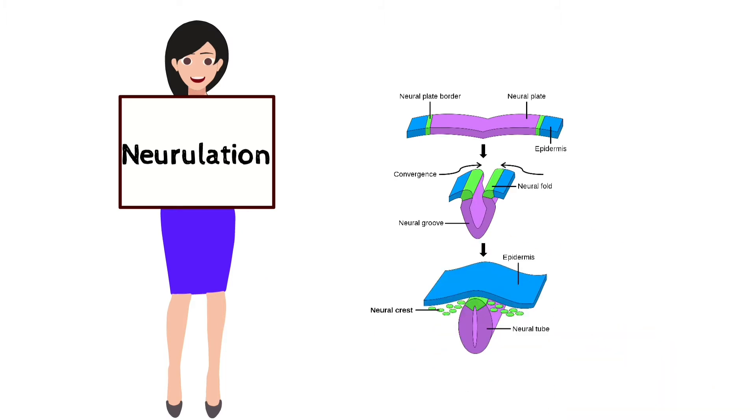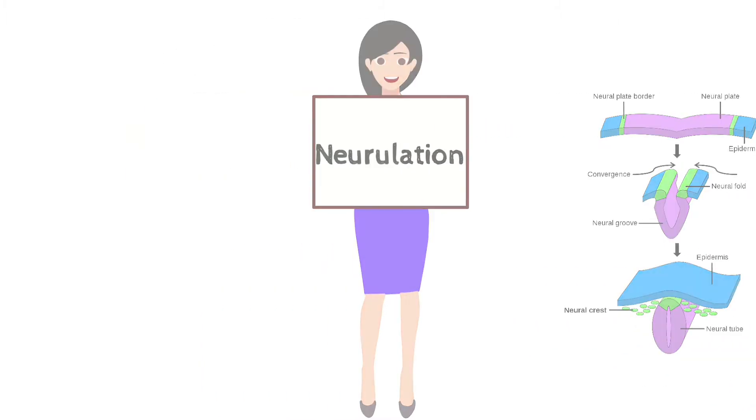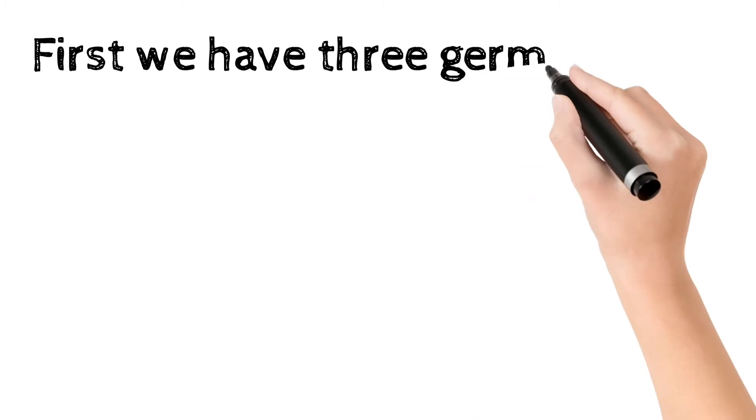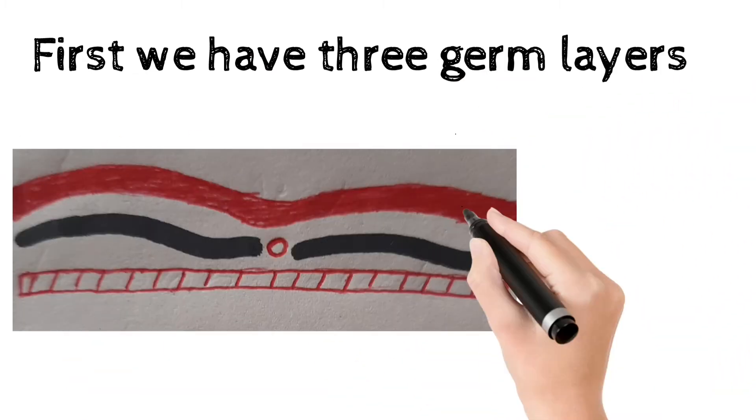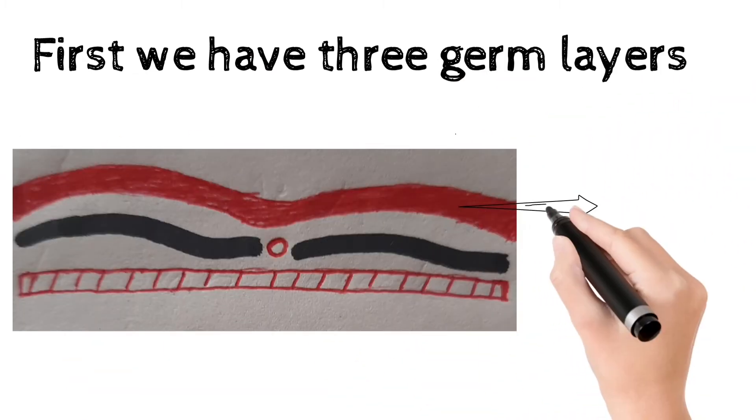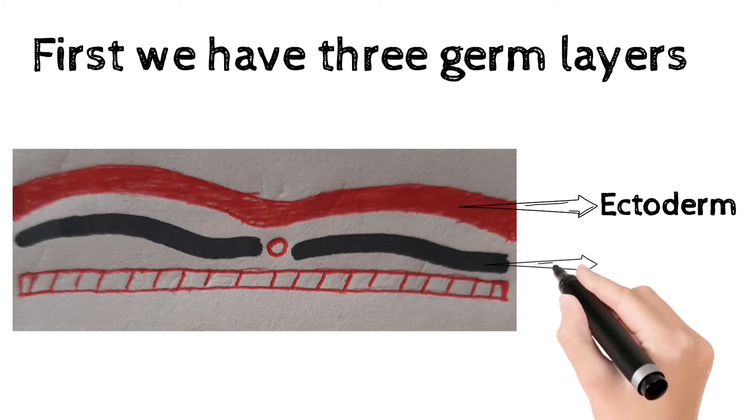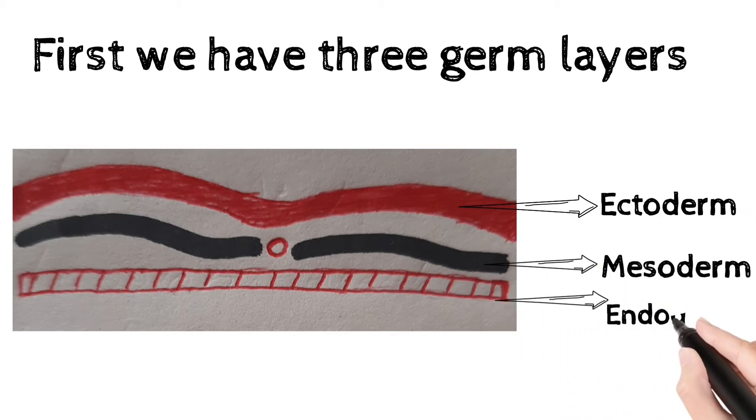We see how nervous system derived from ectoderm. First we have three germ layers, just schematic diagram for better understanding: Ectoderm, Mesoderm, and Endoderm.